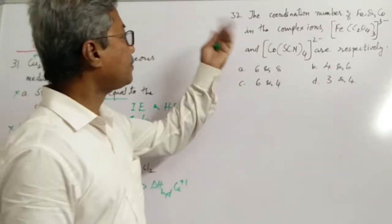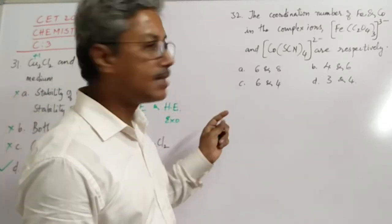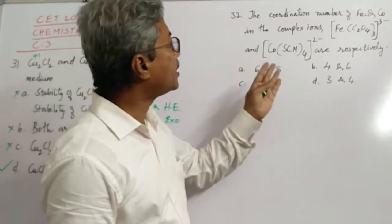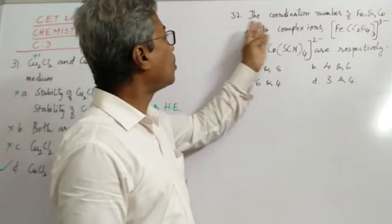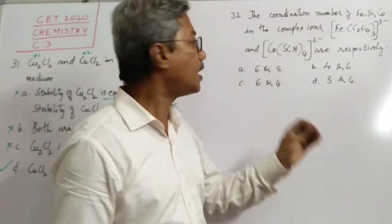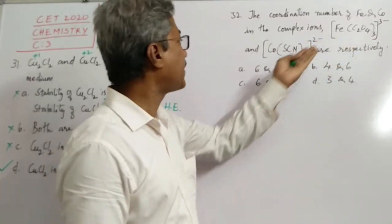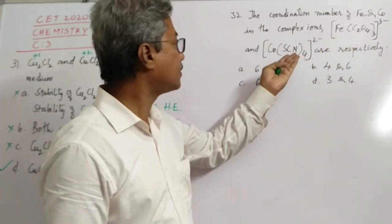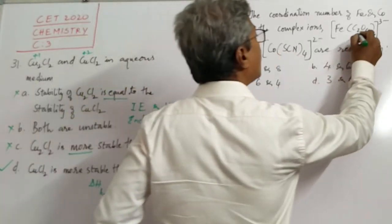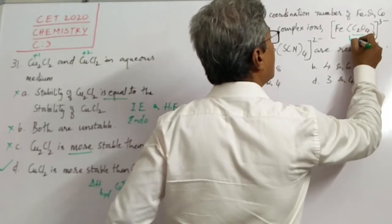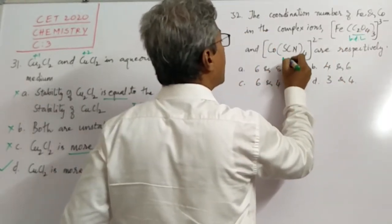Now let us look at question number 32, which is a very simple question. It asks: what are the coordination numbers of iron and cobalt in the complex ions — the oxalate complex of Fe and the cyano complex of cobalt? We need to find the coordination number of each. The oxalate ligand is bidentate and the cyano ligand is monodentate.